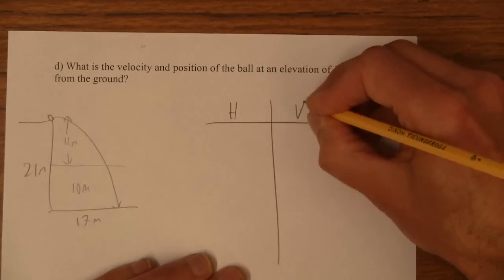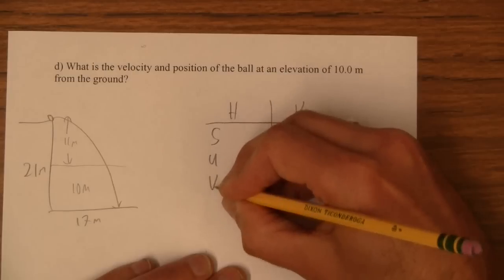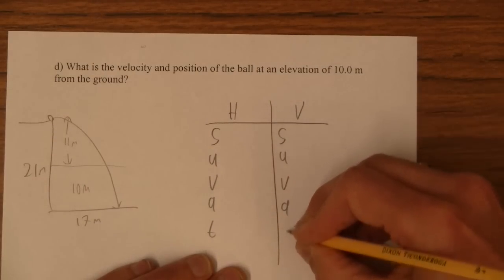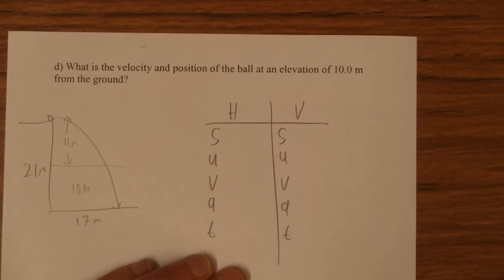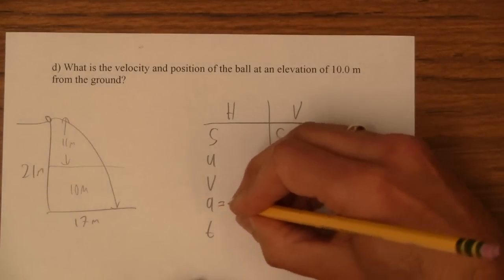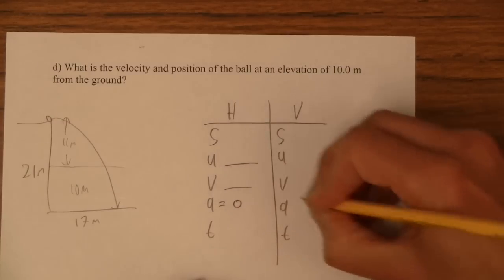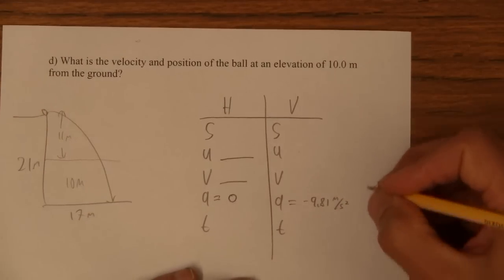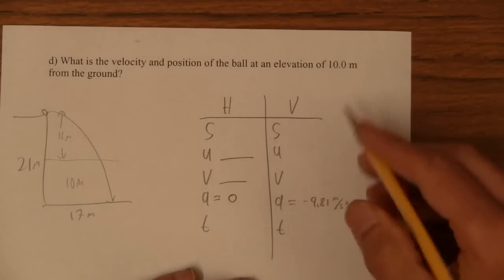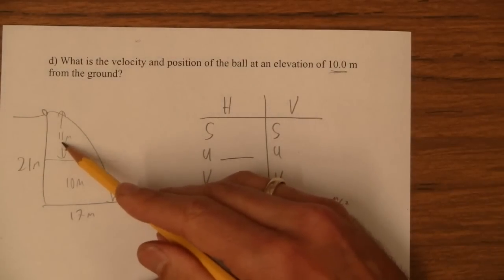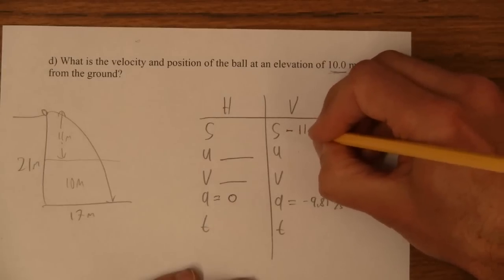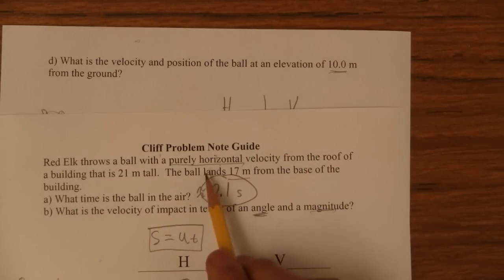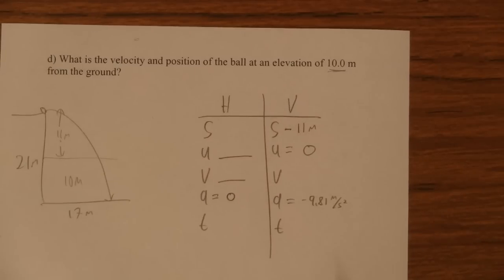So we set up a horizontal thing and vertical displacement, initial velocity, final, acceleration and time. And then we fill these things in. All projectile motion problems have zero acceleration which makes these guys equal. This is negative 9.81 because we're on earth. Here it says an elevation of 10 meters that means we've gone down only 11 meters so let's make this negative 11 meters. Our initial velocity is zero because in the problem it says a purely horizontal velocity.